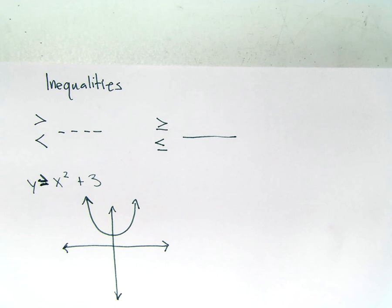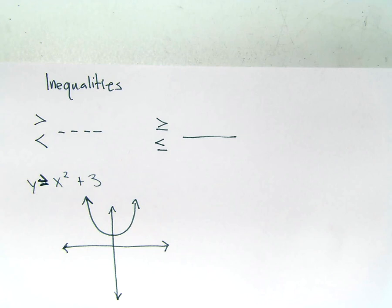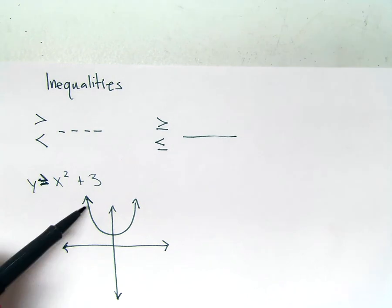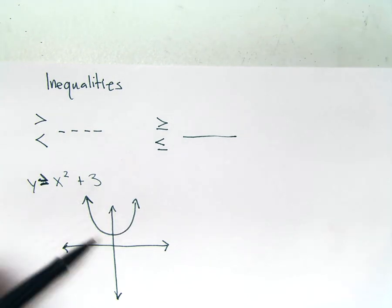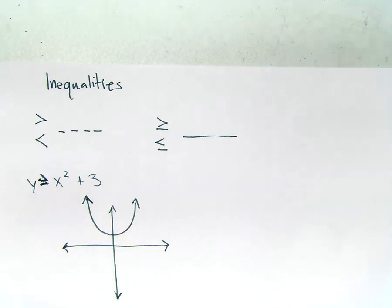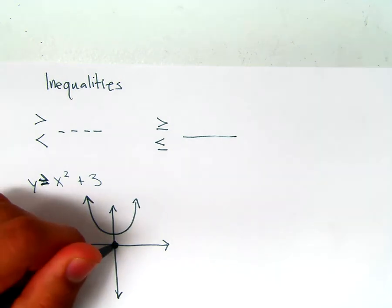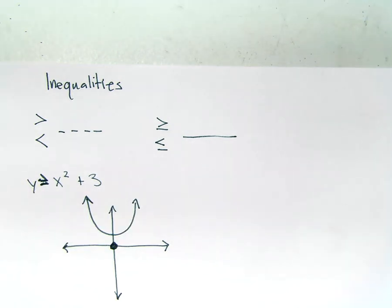The main thing today is just realizing that we now have to shade. We're not only graphing this function — we have to shade it because it's an inequality. In order to do that, we have to use a test point. When you can, 0, 0 is the easiest one to use — that's whenever we do not have the function passing through the origin. So whenever it's not passing through 0, 0, use the origin as your test point because zeros are easy to work with.